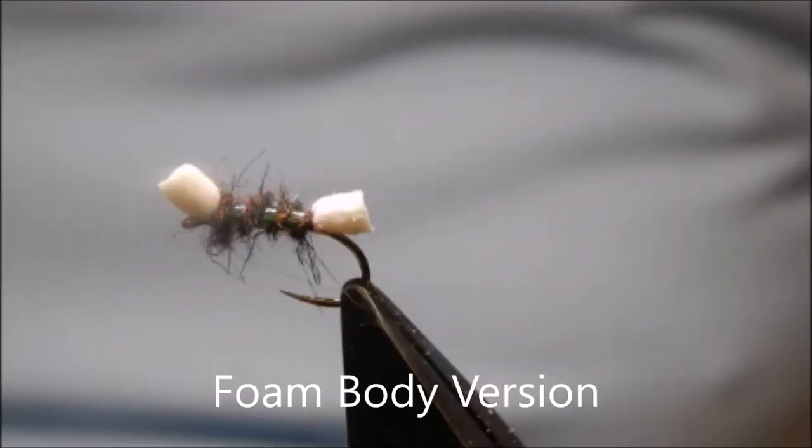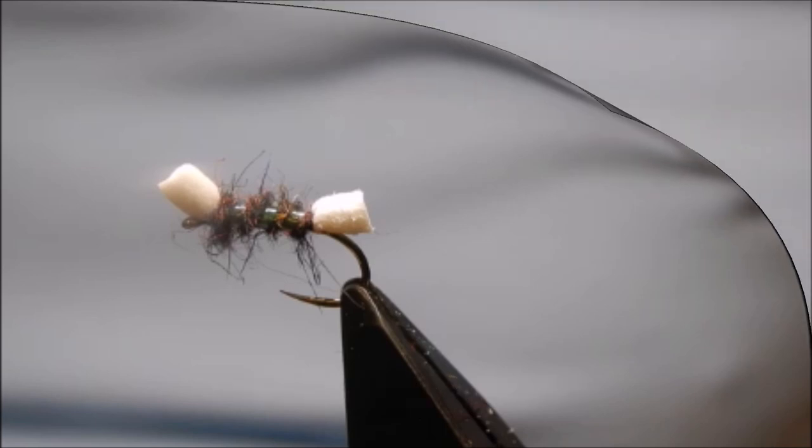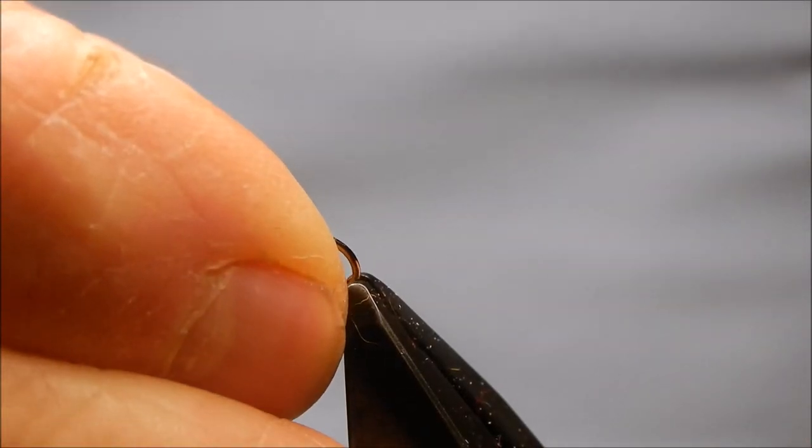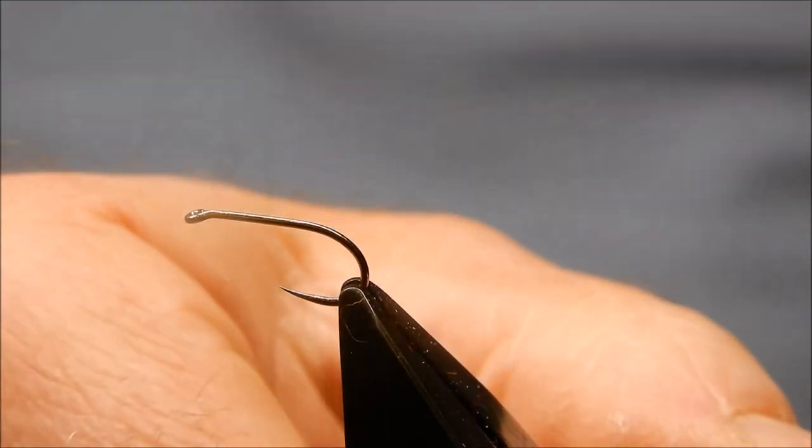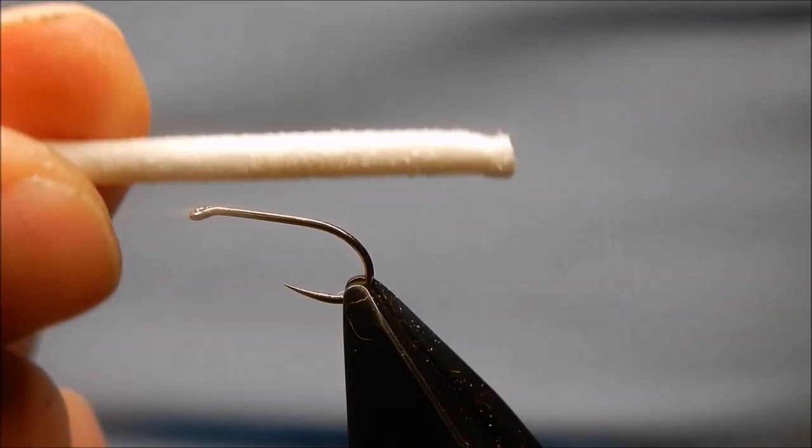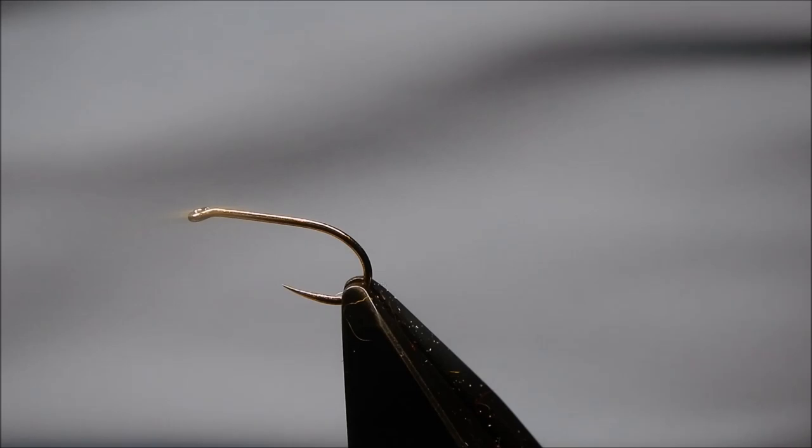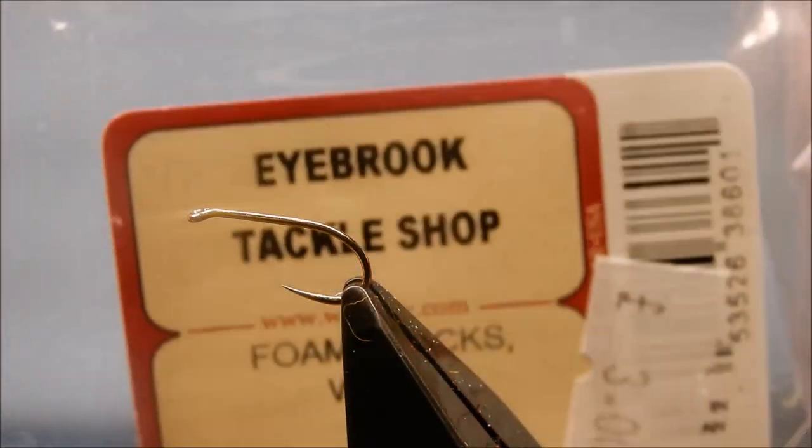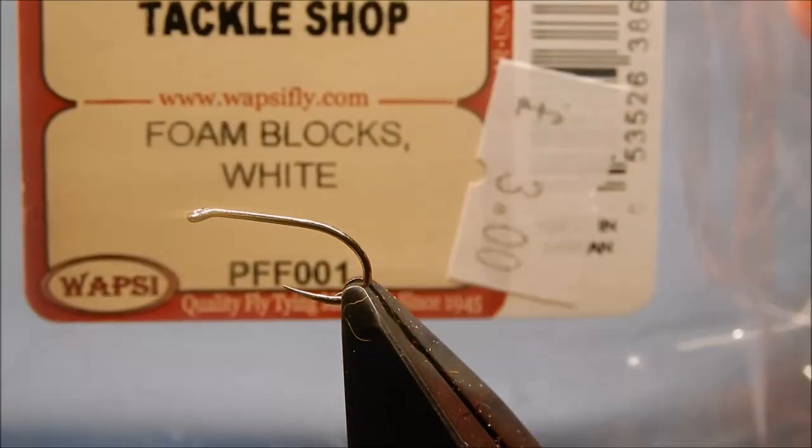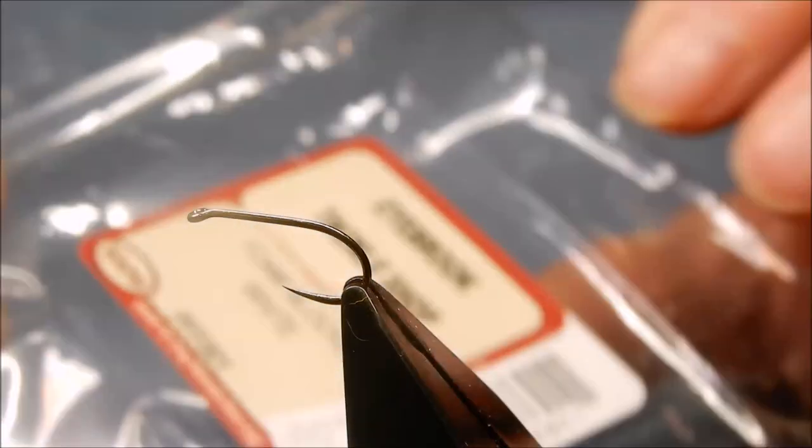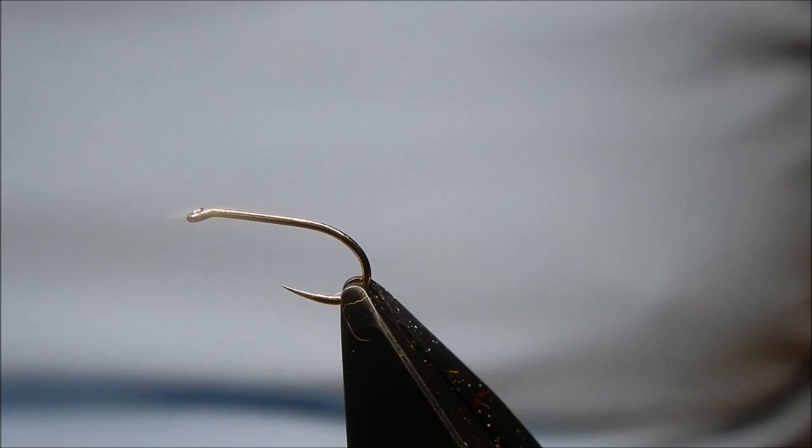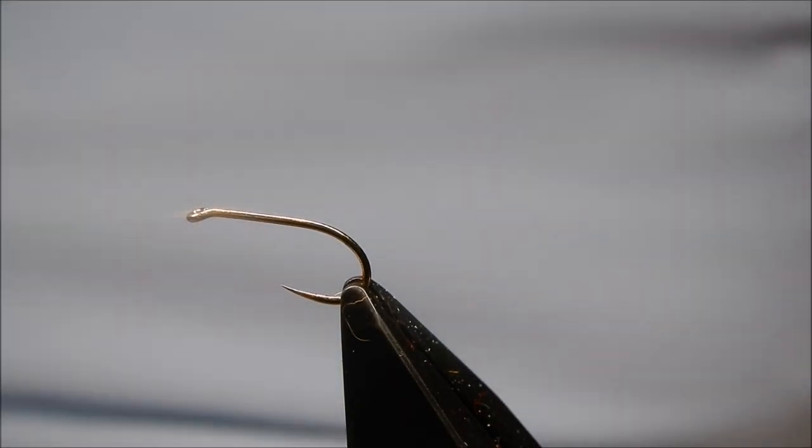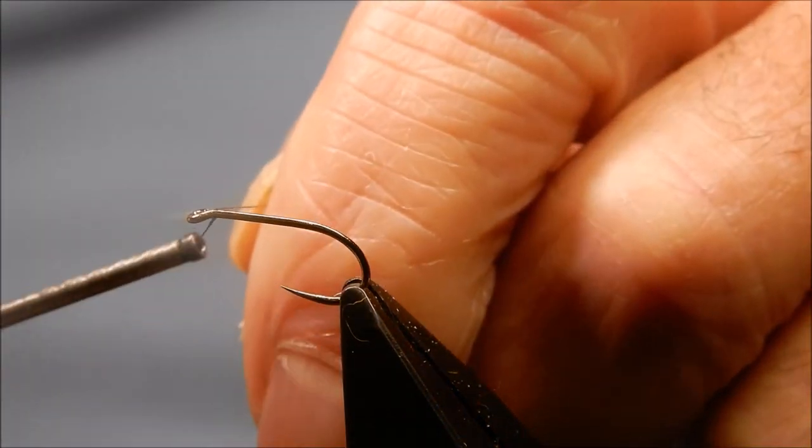I'm going to tie the foam bodied one now. Same hook. I tend to use barbless hooks. The foam is 4mm wopsy foam in white. You can have any colour you want. These are from Ibrook Tackle. Foam blocks. You get about on average 450 foam cylinders from a block. It's about three quid a block.